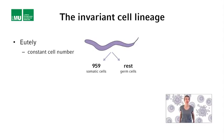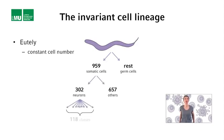Of these 959 cells, 302 for example are neurons, and these 302 neurons fall into 118 different classes of neurons.